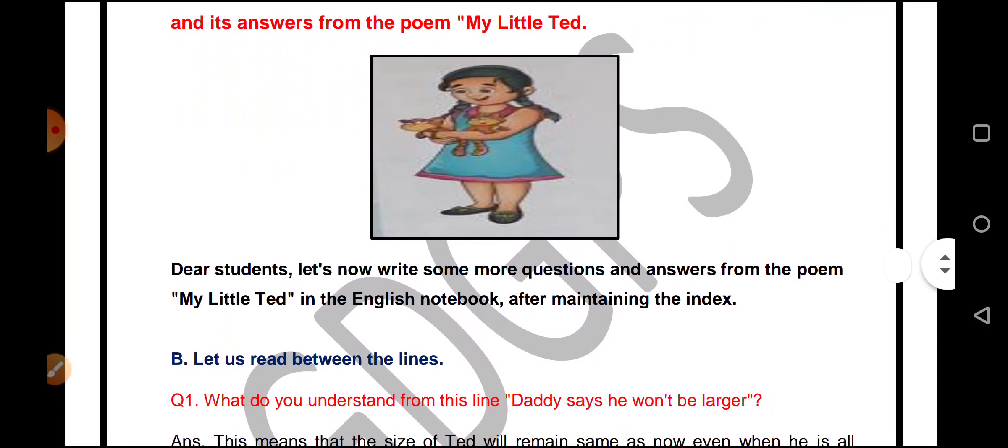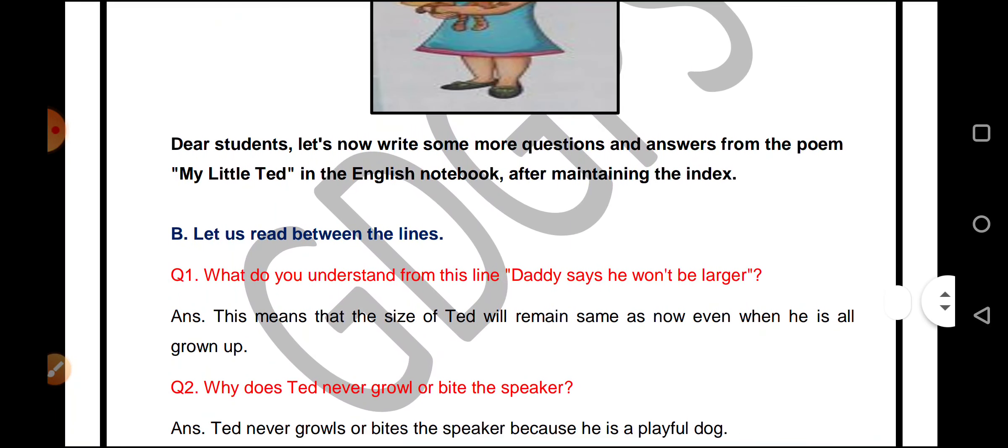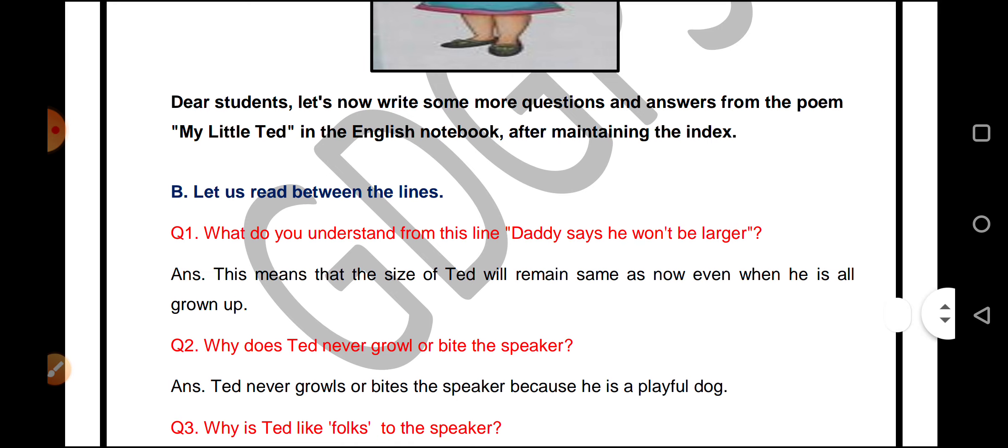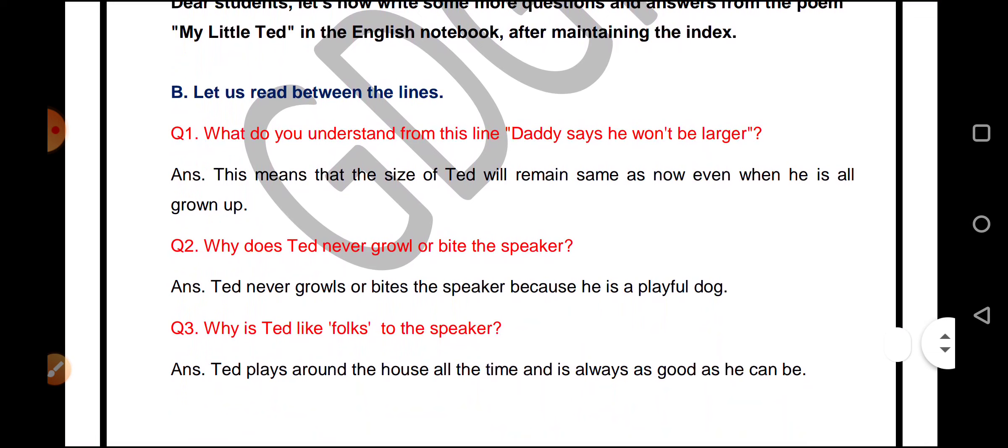What do you understand from the line 'Daddy says he won't be larger'? The poet is confused about why her pet is not growing bigger. She remembers her father telling her that even with age, Ted will not grow larger—his size will remain the same as now even when he is all grown up.